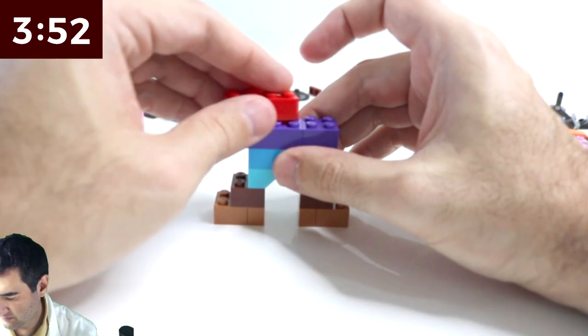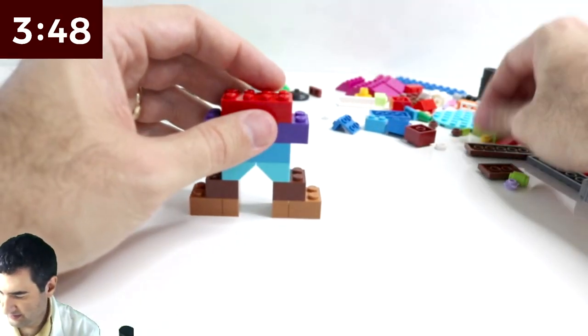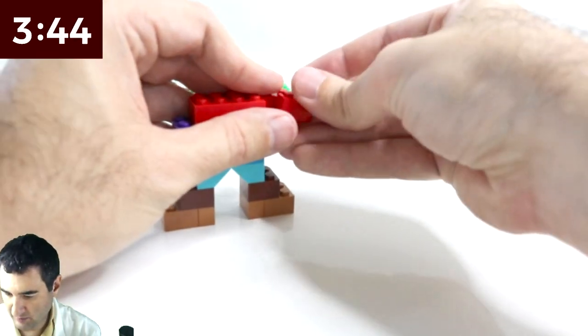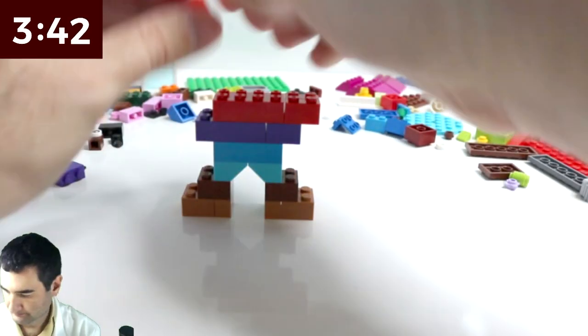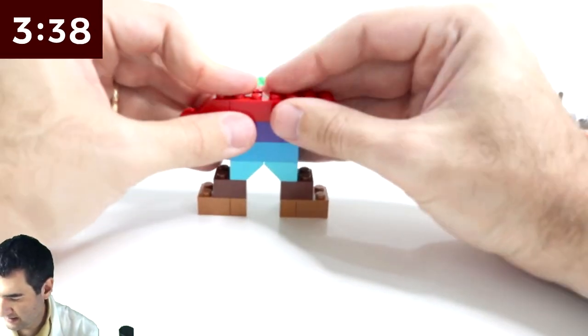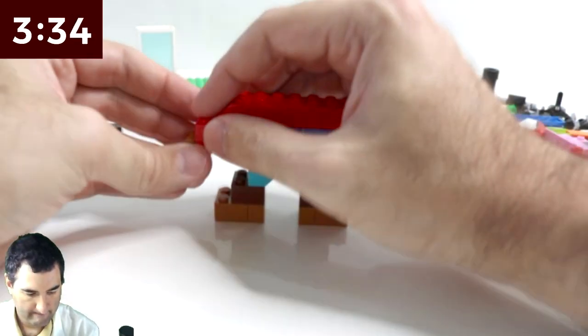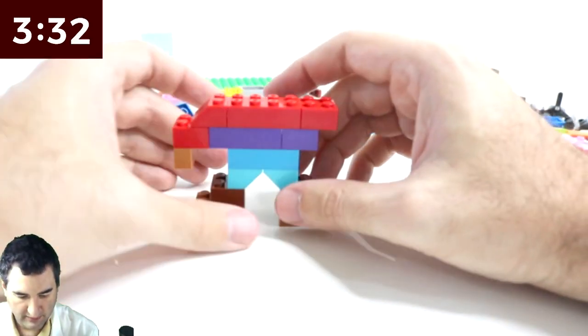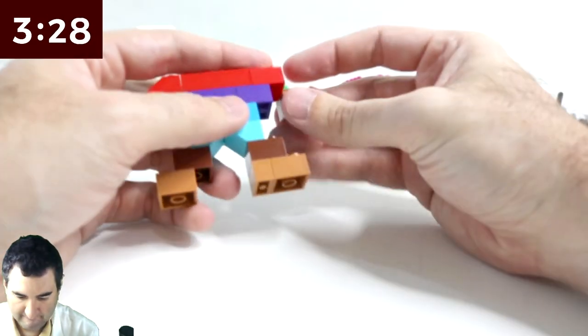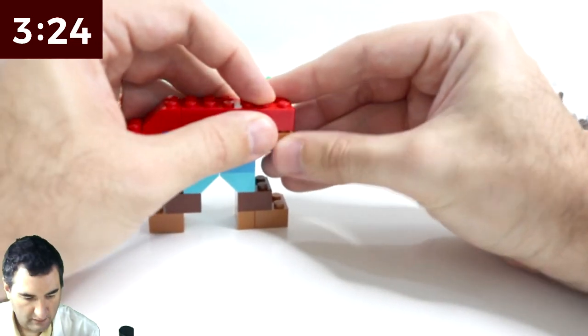Okay, so then he has a red shirt underneath his overalls and that's what his arms are as well, that red color. And then he's got yellow hands underneath all that. There we go.